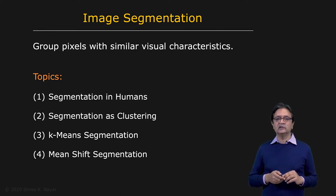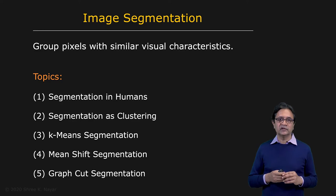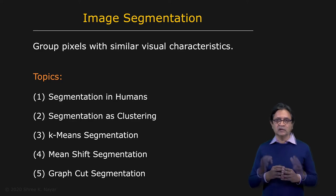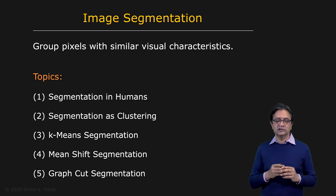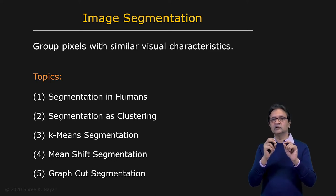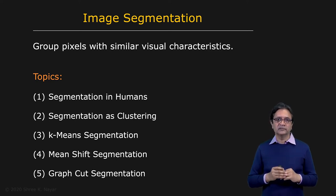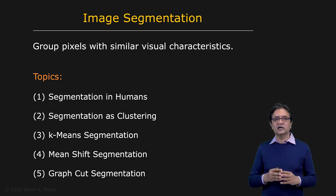Finally, we look at the use of a graph-based approach for segmentation, called the graph cut approach. In this case, we represent the image as a graph — the pixels are vertices and the similarities between pixels correspond to weights of edges in the graph. We then find the various segments of the image by finding cuts in the graph.